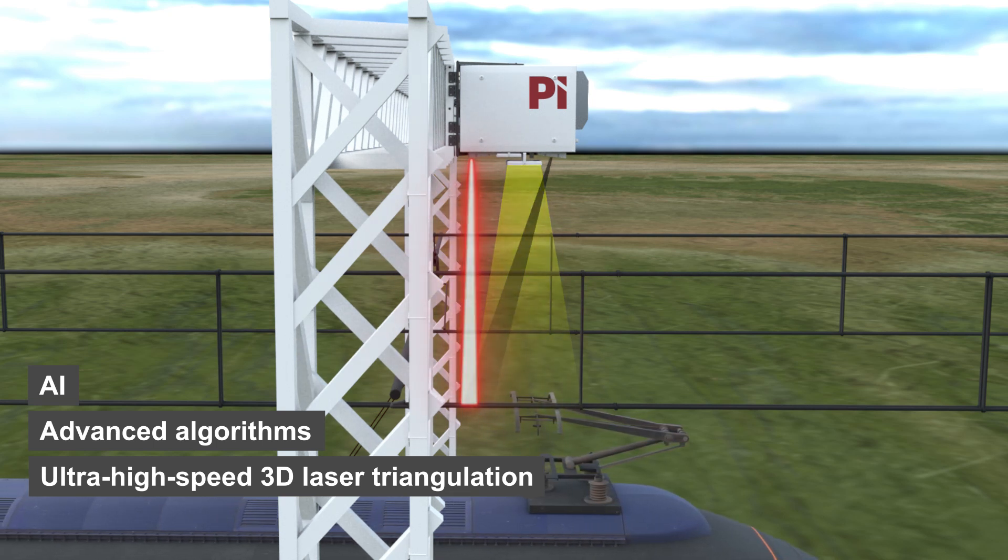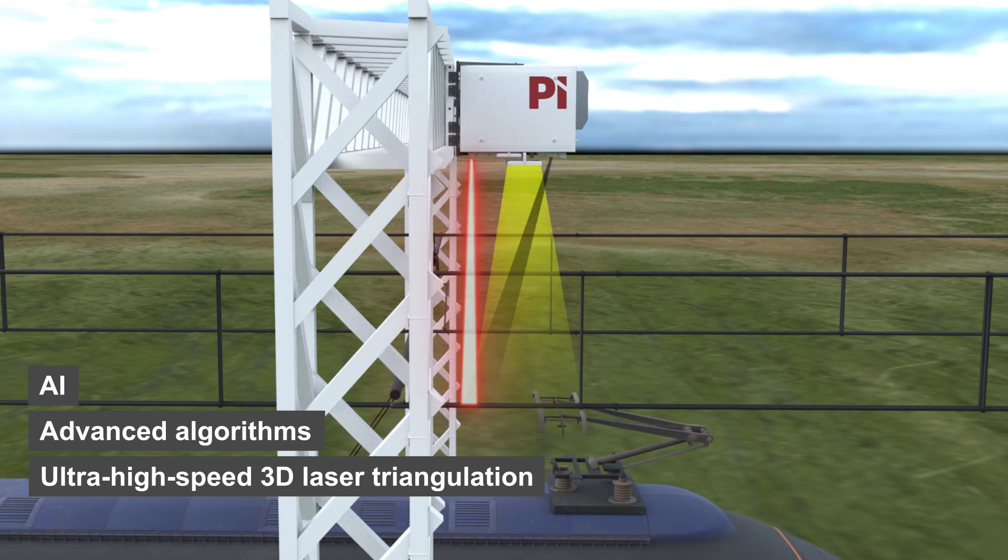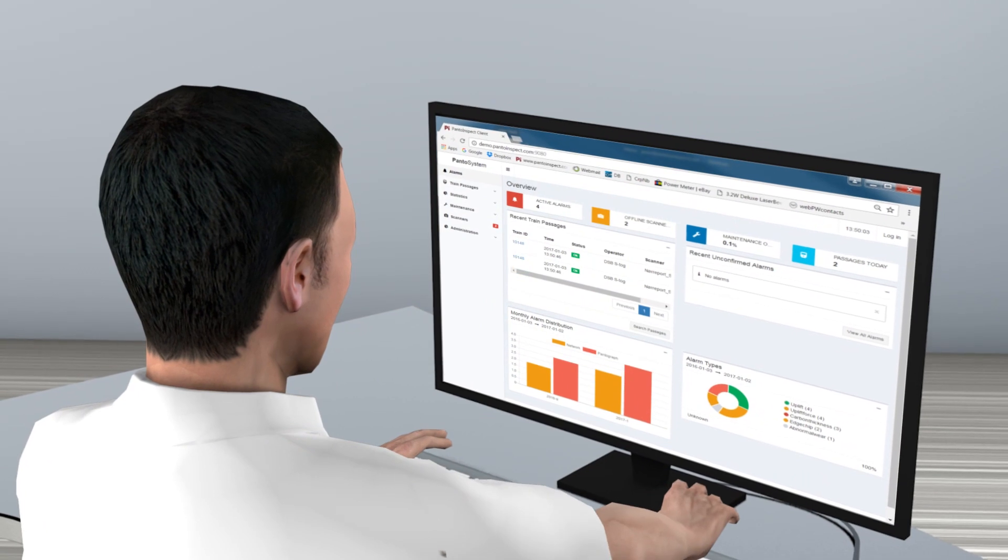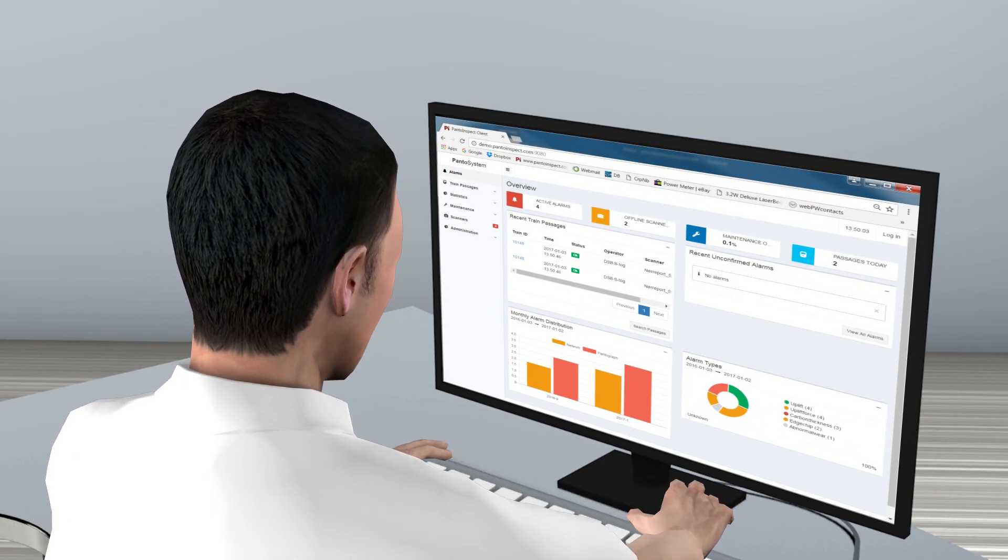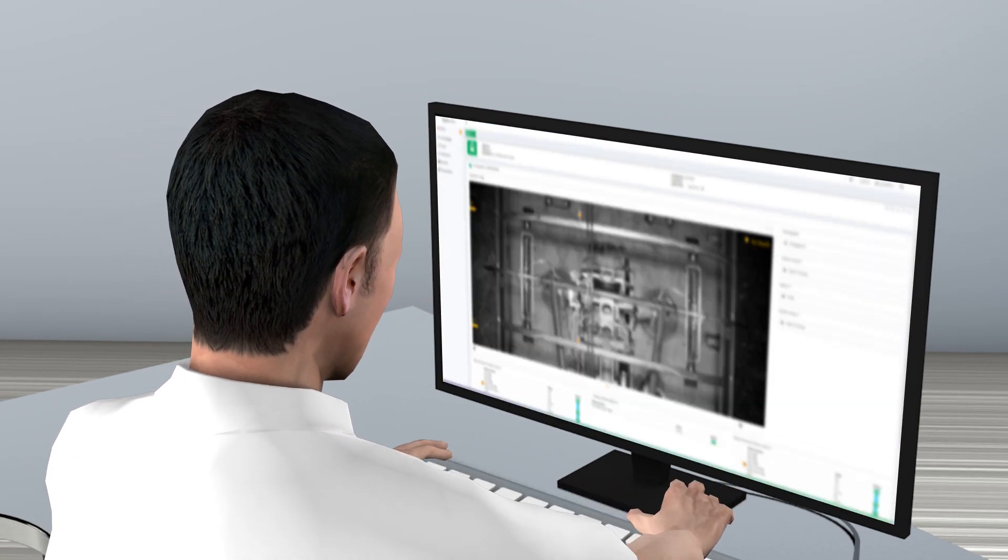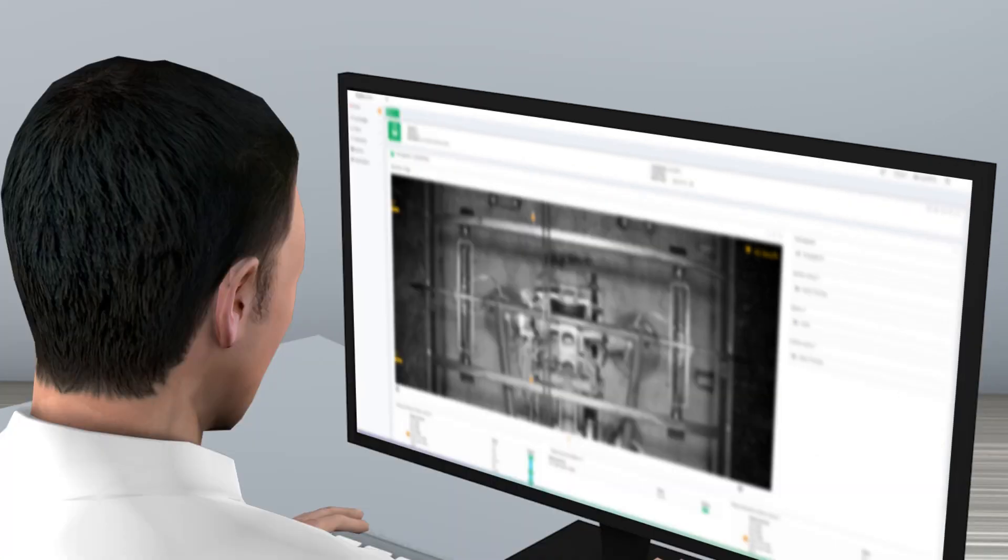The system captures automated and real-time data on high-speed trains running up to 350 km per hour. All data captured is analyzed in the Panto server and displayed in the Panto client, a web-based user interface with superior alarm handling capabilities.